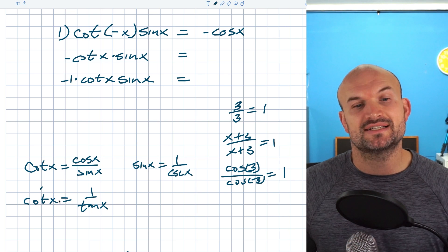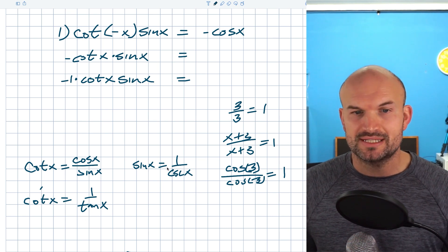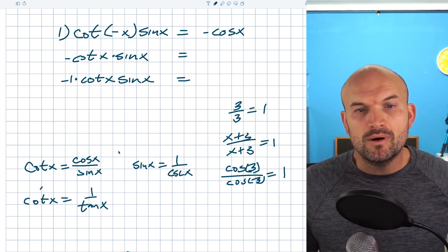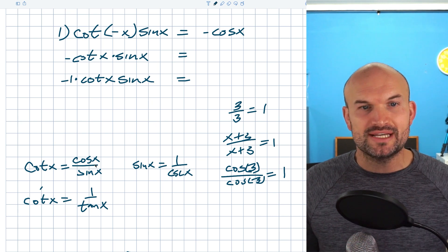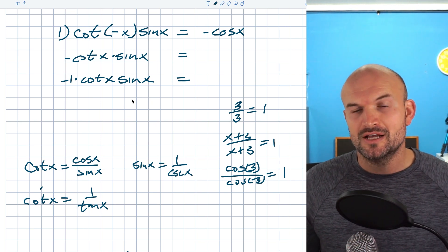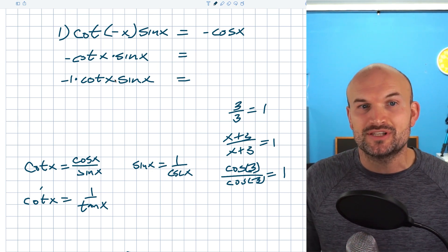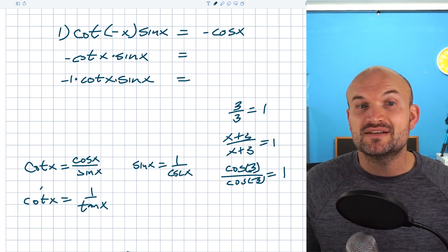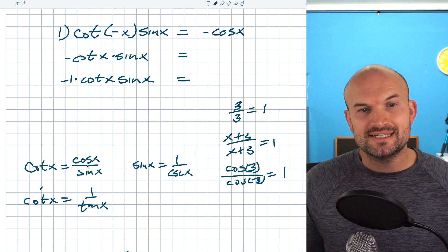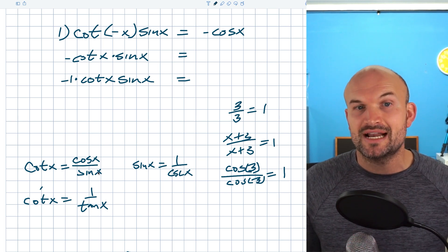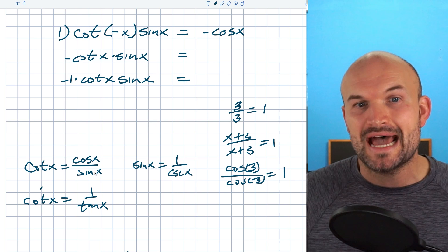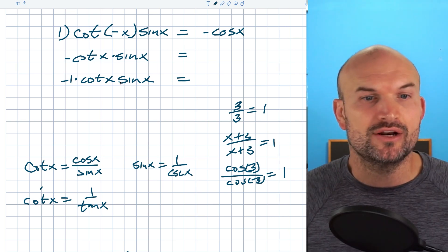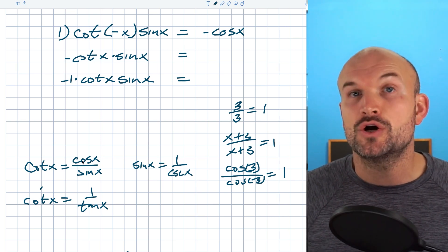I could also write cotangent of x as one over tangent of x — that's the reciprocal identity. Or I could rewrite sine as one over cosecant of x, also the reciprocal identity. We need to make a decision where we rewrite one or both expressions so that something divides out and we're left with just a cosine. If I use cotangent of x equals cosine of x over sine of x, that puts a sine of x in my denominator, which will divide out with the sine of x in the numerator.